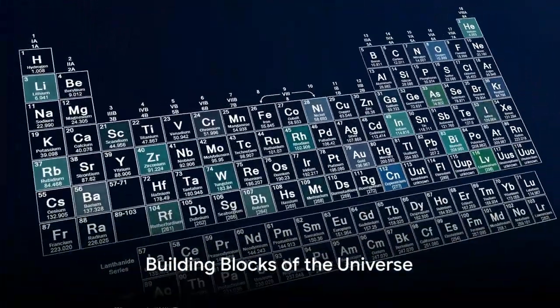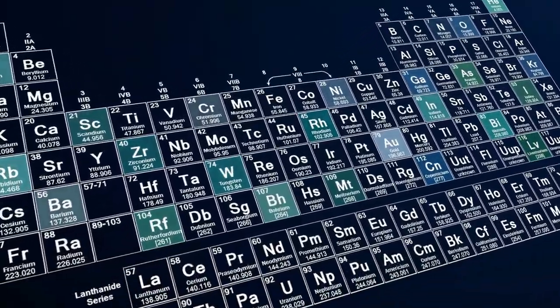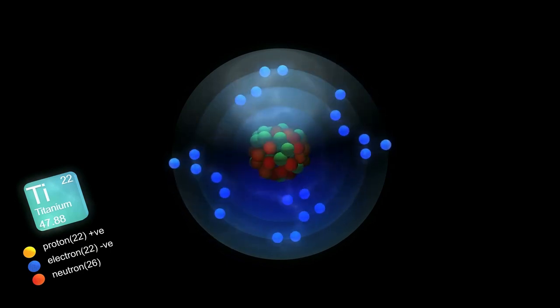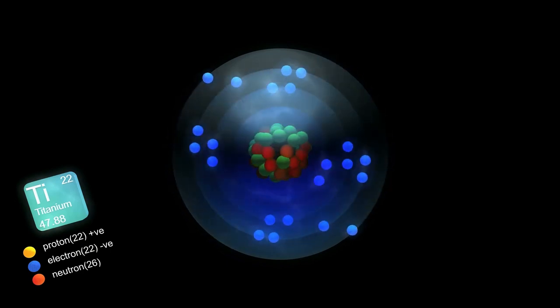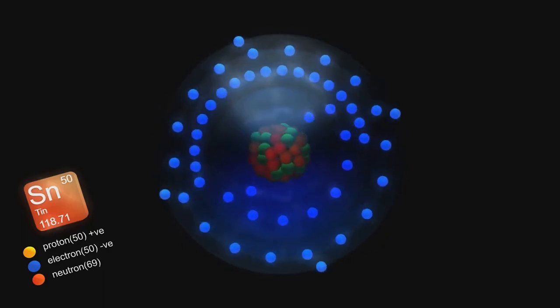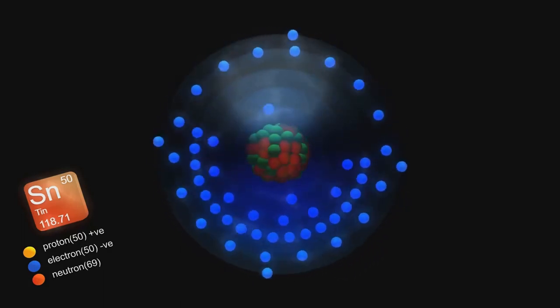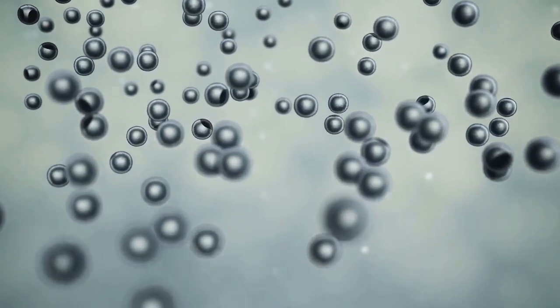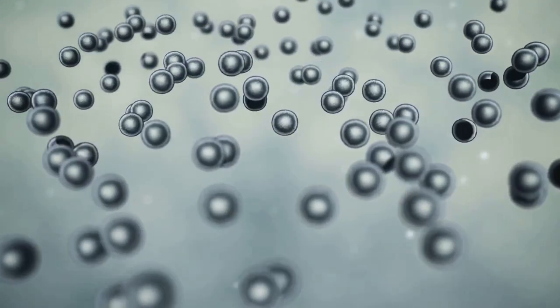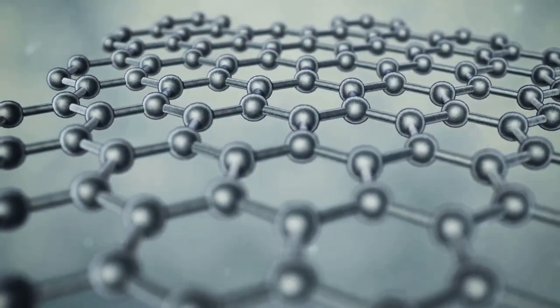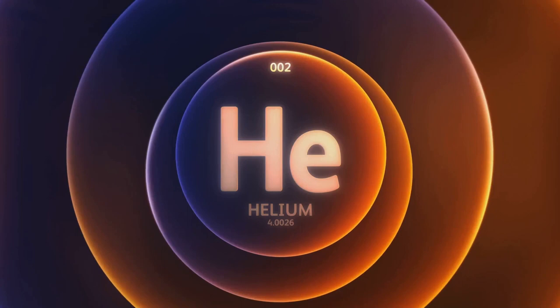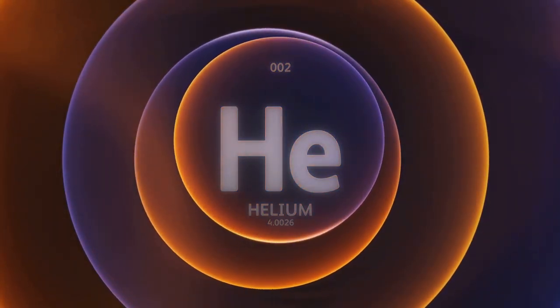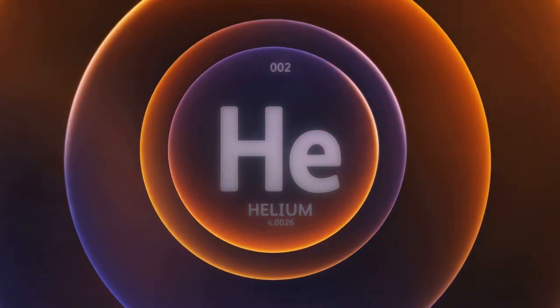Each atom is unique, just like a fingerprint. Ever heard of the periodic table? It's a master list of all known elements, each with a distinct atomic number that tells us the number of protons and electrons in that atom. But here's the magic. When these atoms, with their protons, neutrons, and electrons, come together in different ways, they form all the different elements we know. From helium in balloons to carbon in your pencil, these unique combinations create the diverse world we see around us.